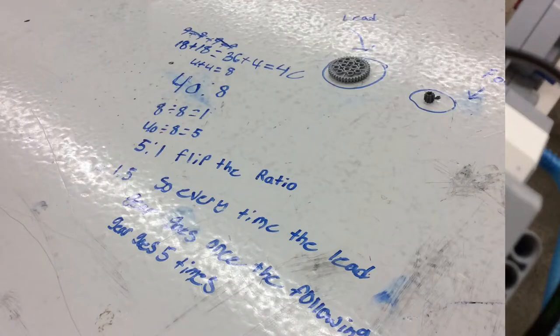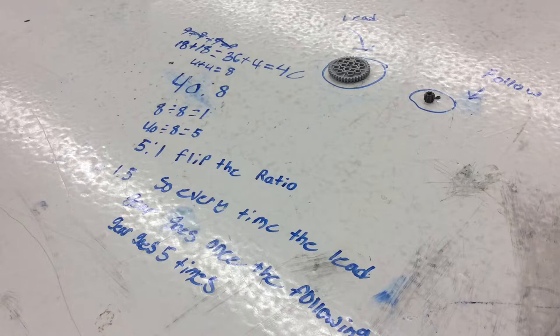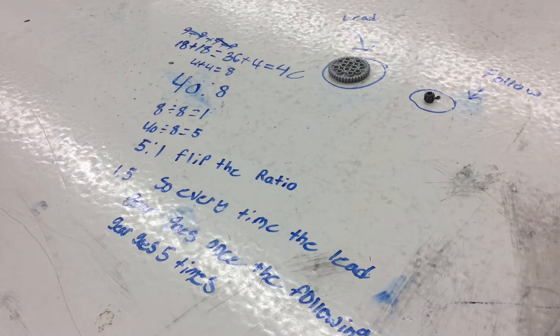For our lead gear and follow gear, our lead had 40 and our follow had 8, so it's 40 to 8. That simplified is 8 divided by 8 equals 1, 40 divided by 8 equals 5, so it's 5 to 1. We flipped the ratio and got 1 to 5, so every time the lead gear spins one time, the following will spin 5.